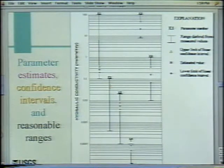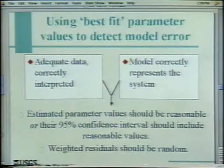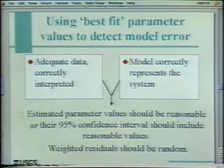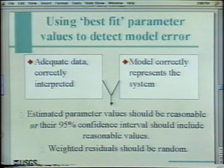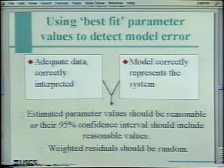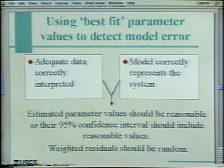The 95% confidence intervals should include reasonable values. If these things are contradicted — if you have an estimated value that's even three orders of magnitude too high — you can do a couple of things: you can slap prior information on that parameter to bring it back down, or you might go back and say you've got a model problem. The latter should lead to a more accurate model. The other thing you expect, given adequate data and a correct model, is that weighted residuals should be random.